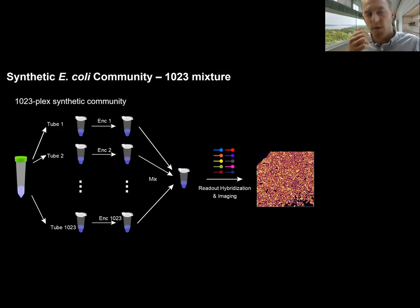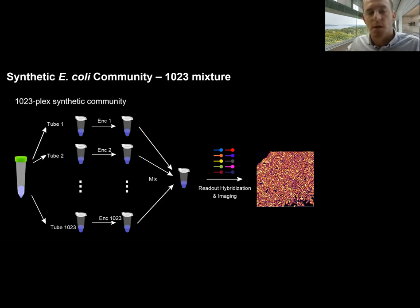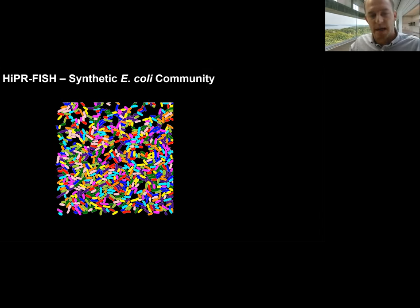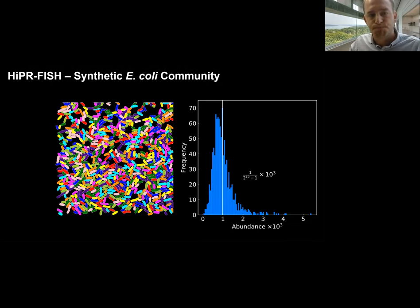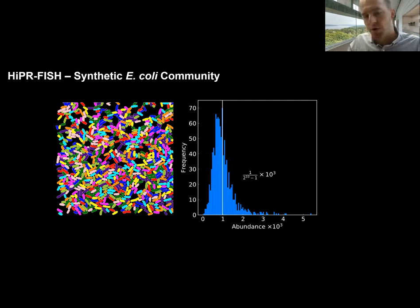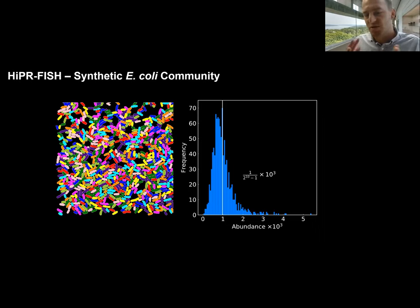To further test the system, we took the library of 1,023 species labeled with all possible combinations of 10 fluorophores, mixed them together in equal quantities, labeled the community, and imaged it. This is an example segmented image false-colored by spectral barcode. We counted the number of cells in this community and found that every barcode out of all possible 1,023 is represented, with median abundance close to 1 in 1,000 as expected, and the distribution follows the expected distribution.